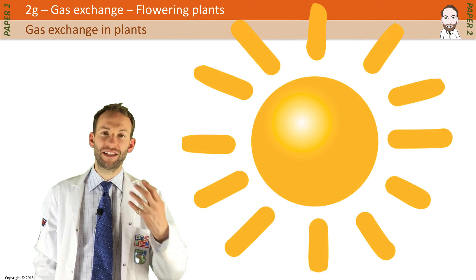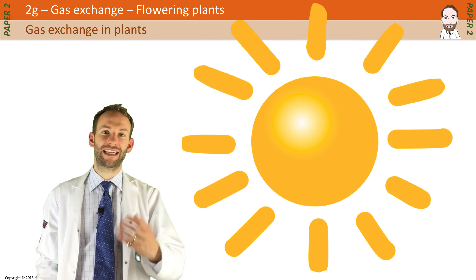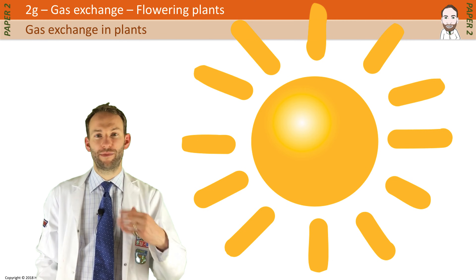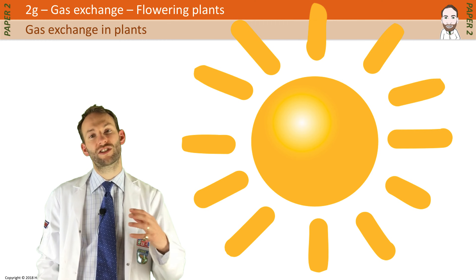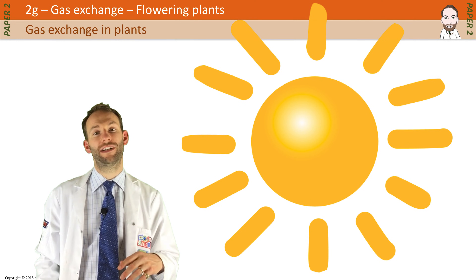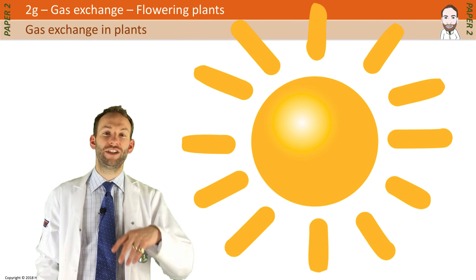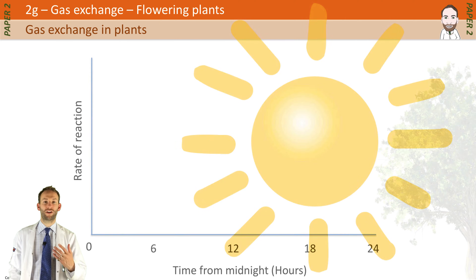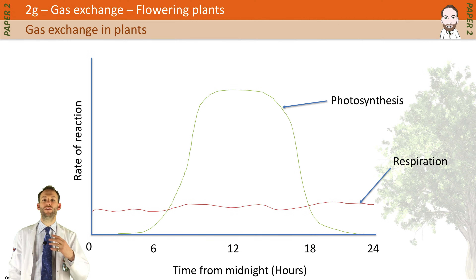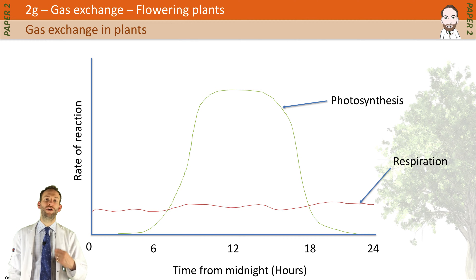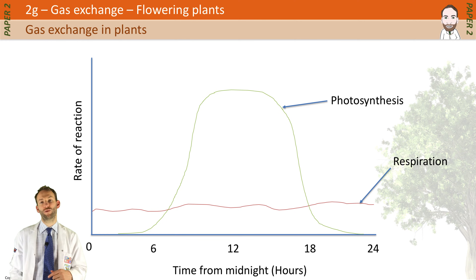So when the sun is out, the net exchange of gases is going to be in favour of photosynthesis. And when it's dark, the net exchange of gases will be in favour of respiration. You can represent that more easily on a graph, and thinking about what time of day it is, you can work out which gases would be coming in and which would be going out.